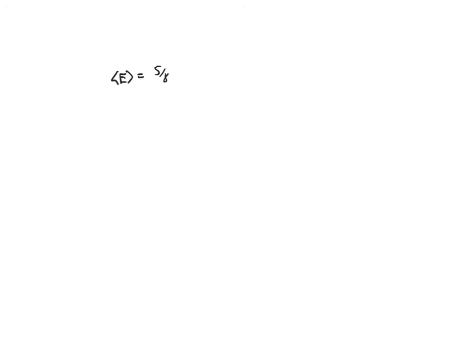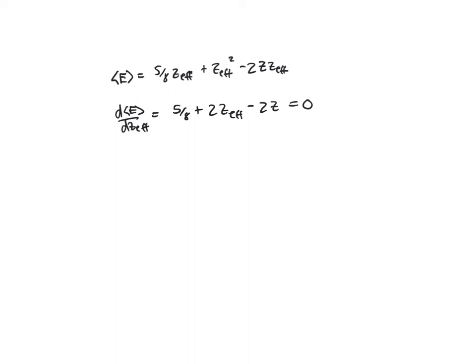If I do that for the helium atom, I find that the expectation value of the energy is equal to five-eighths Z_effective plus Z_effective squared minus two times Z times Z_effective. Taking the derivative of that with respect to Z_effective, I get five-eighths plus two times Z_effective minus two Z. Setting that equal to zero, I find that Z_effective is equal to 1.6875.